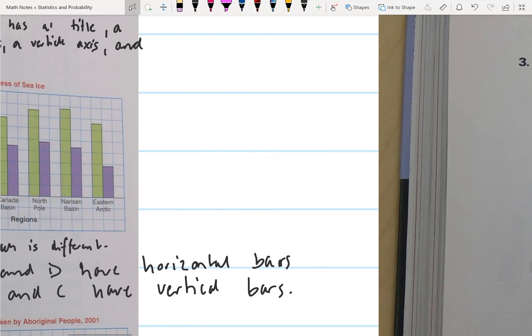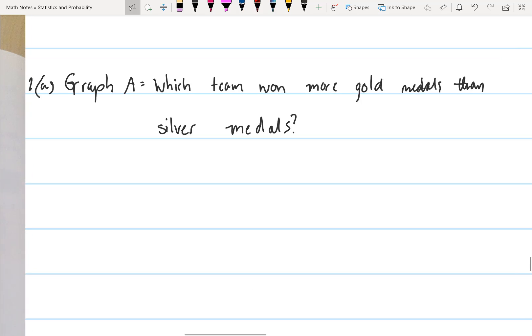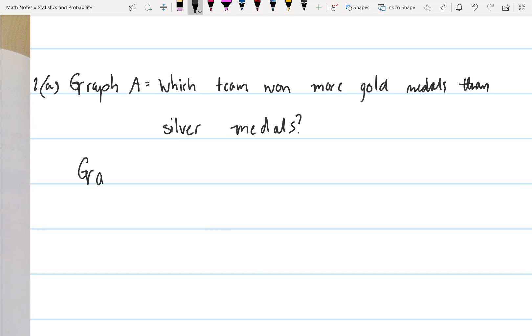My question for graph B would be what has happened to the sea ice in all the regions shown? And the answer is all the sea ice has decreased in thickness.